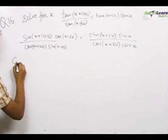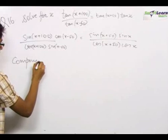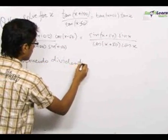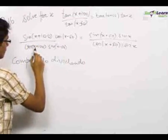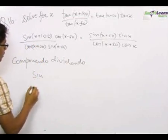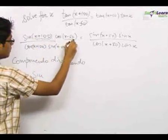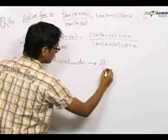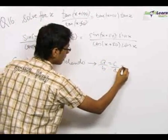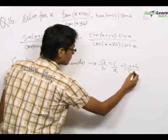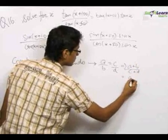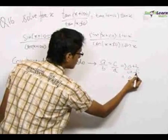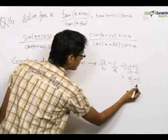Now, if we apply componendo dividendo to the above equation, we use the rule: if a upon b equals c upon d, then a plus b upon a minus b equals c plus d upon c minus d.